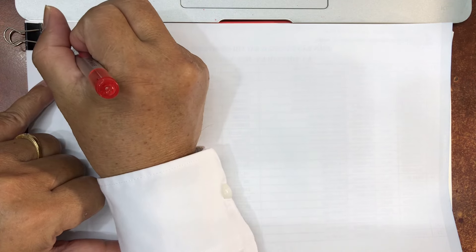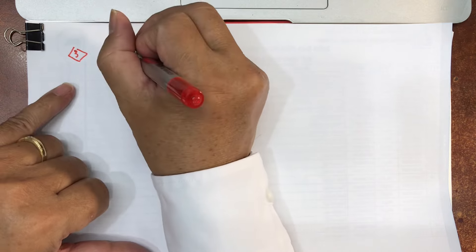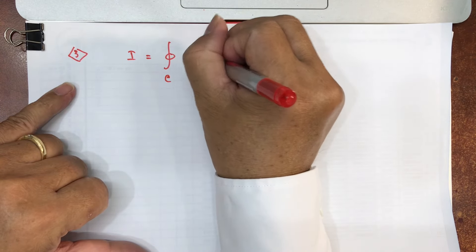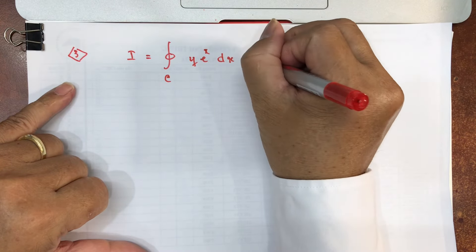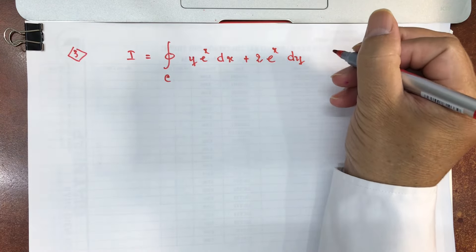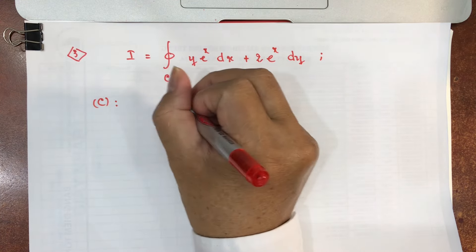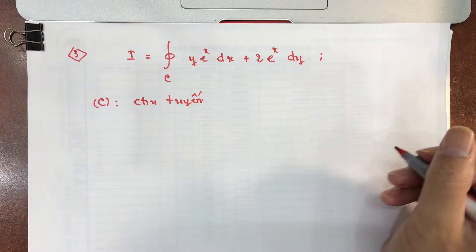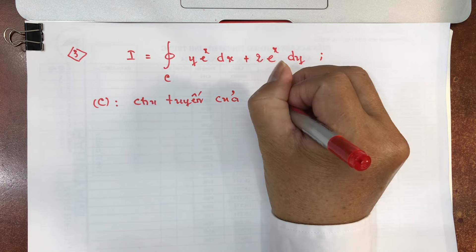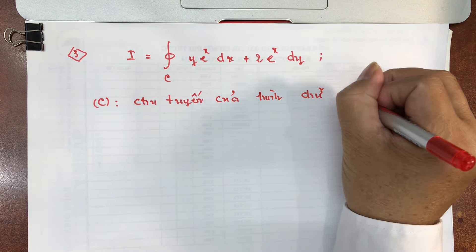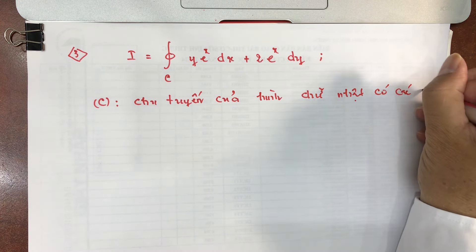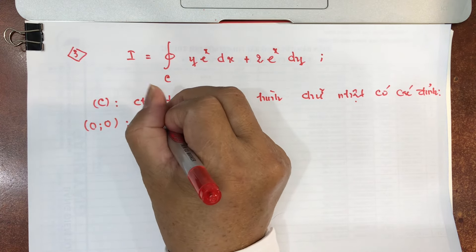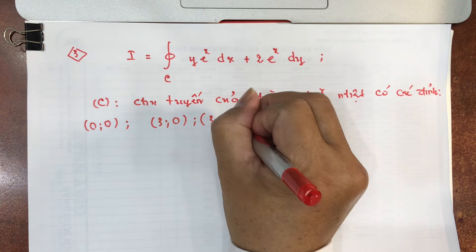Ví dụ 3: Tính tích phân trên đường cong kín C của y·eˣ·dx cộng 2eˣ·dy. Ở đây C là chu tuyến của hình chữ nhật có các đỉnh: (0,0), (3,0), (3,4), (0,4).